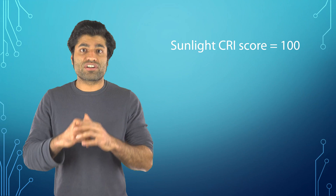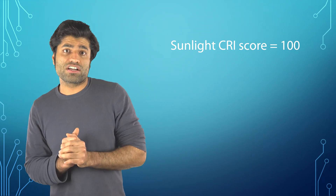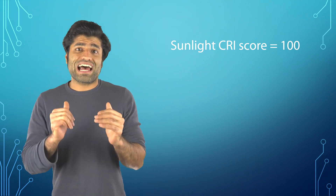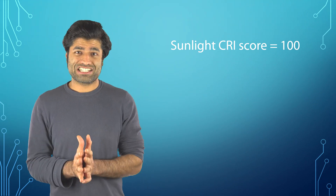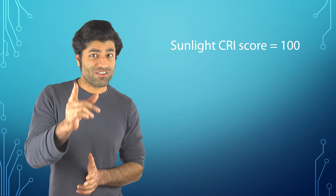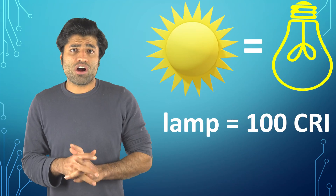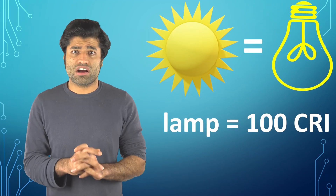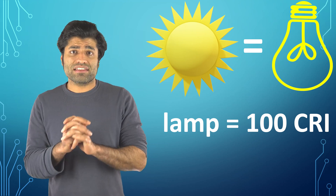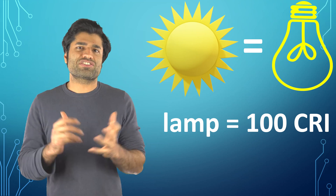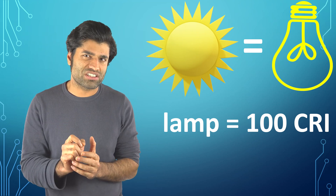Sunlight has a CRI score of 100. Therefore, the highest CRI score that an artificial light can achieve is 100. So if a lamp has a score of 100 CRI, that means the lamp and the sun give the same colors of an object.